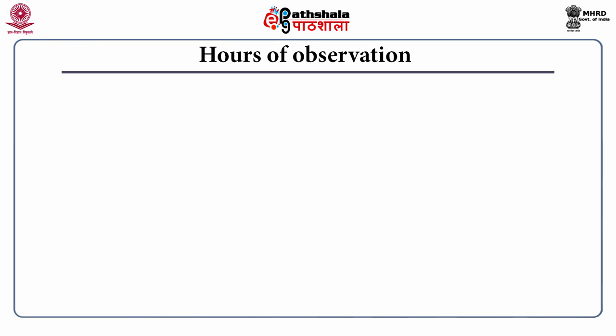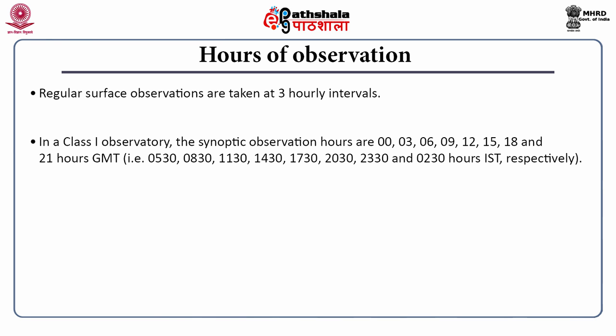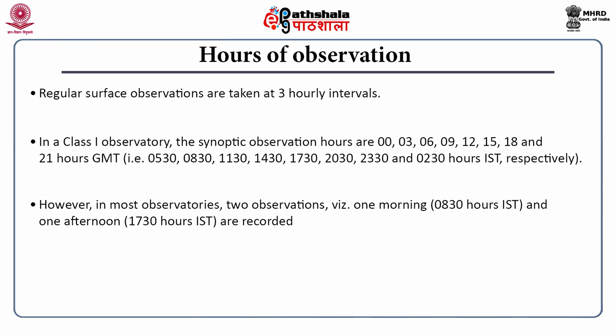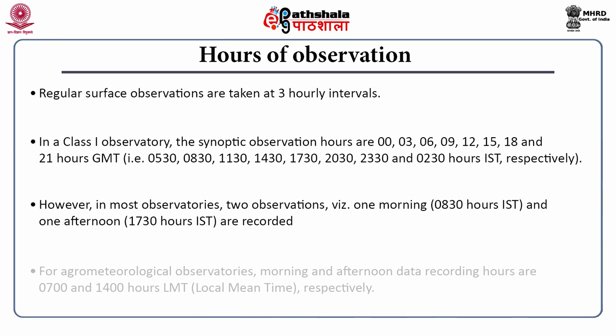Another important consideration is hours of observations. In case of surface observatories, regular surface observations are taken at three-hourly intervals. The synoptic hours start at 0 GMT and observations are taken at every three-hour interval — 3, 6, 9, 12, and so on up to 21 GMT. However, in most observatories in India, two observations are recorded: one morning observation at 8:30 hours IST and another afternoon observation at 17:30 IST. For agrometeorological observatories, morning observation is taken at 7 LMT and afternoon observation at 14 LMT, where LMT means local mean time.